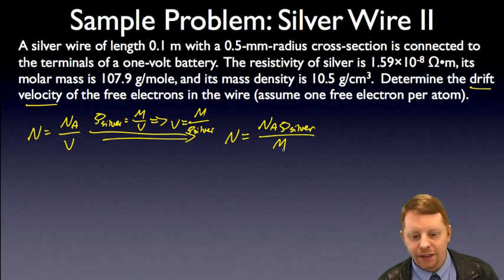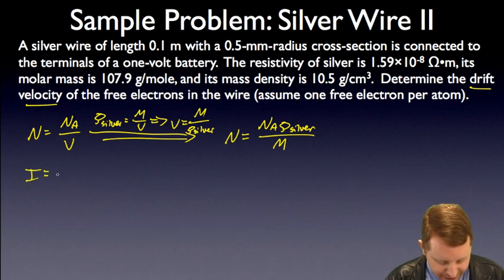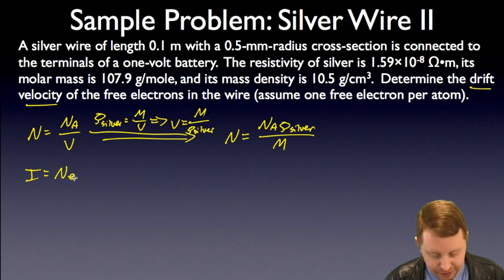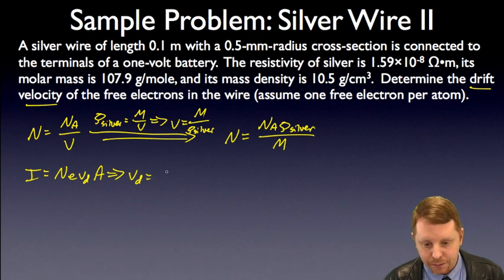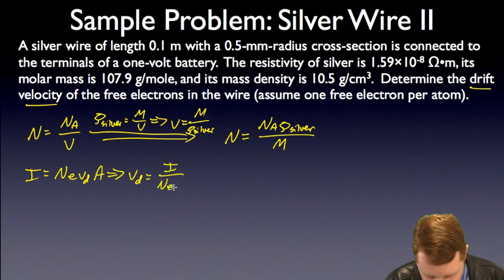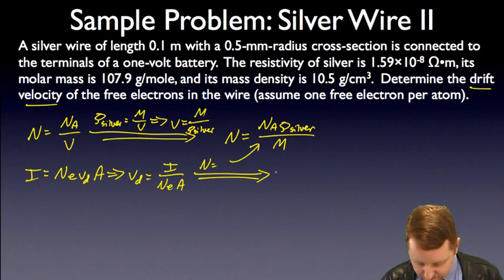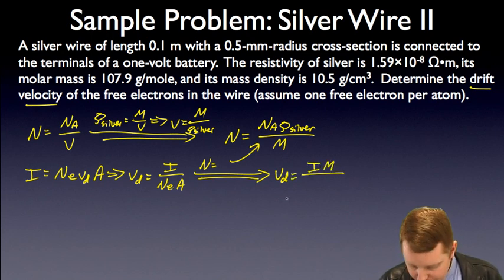All right, now let's see if we can't find the drift velocity by starting with our equation for current. We already had current equals n, our volume carrier density, times the charge on each carrier, times our drift velocity, times the cross-sectional area. So rearranging for drift velocity, that's going to be i over nEa. We just found n equal to that right there. So we could rewrite the drift velocity as i times the molar mass over Avogadro's number, density of silver, times ea.